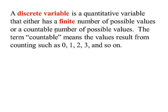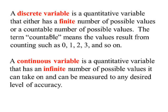The term countable means that the values result from counting, such as 0, 1, 2, 3, 4, and so on. So an example of a discrete variable would be the number of cars that you own, the number of floors in a building, the number of CDs that you own, the number of students in a classroom.